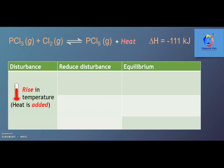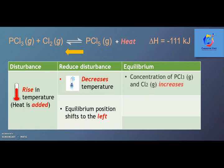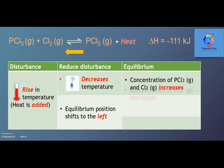If there is a rise in temperature as the disturbance, by recalling Le Chatelier's principle, the system will remove the disturbance by decreasing the temperature. Thus, the equilibrium position will shift to the left. The concentration of PCl3 gas and Cl2 gas will increase, whereas the concentration of PCl5 gas decreases. Consequently, the equilibrium constant Kc will decrease.